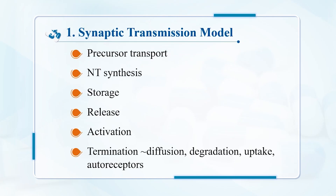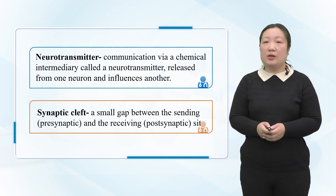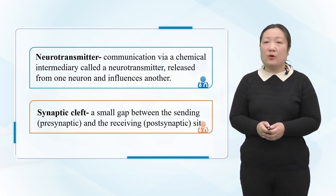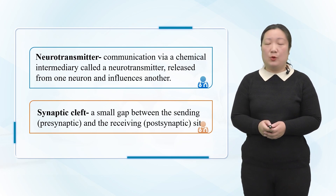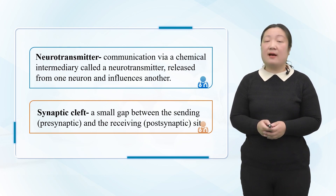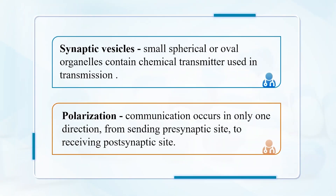I will introduce some knowledge about the synaptic transmission model. Some very important concepts: Neurotransmitter — a chemical intermediary released from one neuron that influences another. Synaptic cleft — a very small gap between the sending and receiving sites. Polarization — communication occurs only in one direction, from the sending pre-synaptic site to the receiving post-synaptic site.